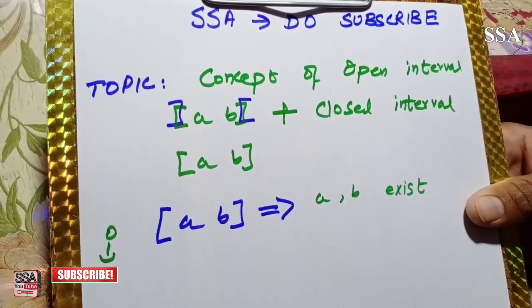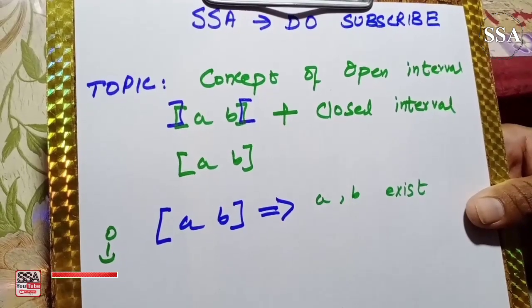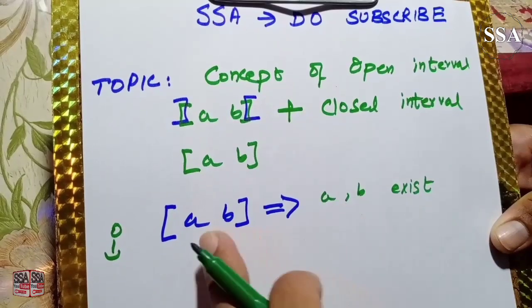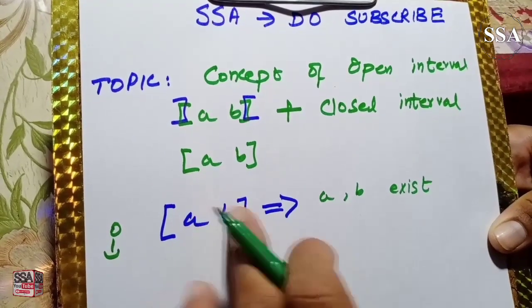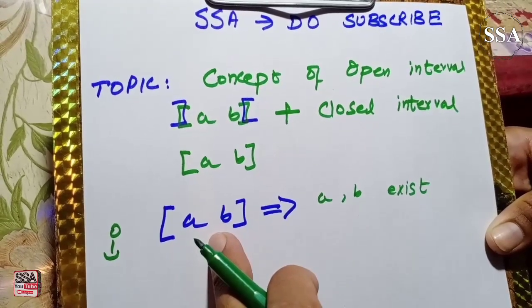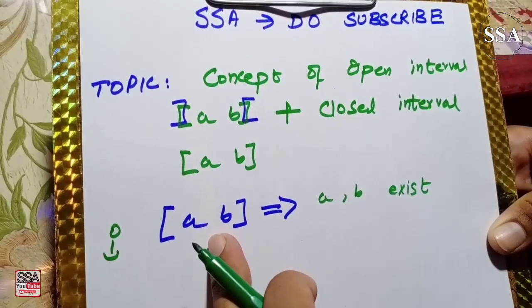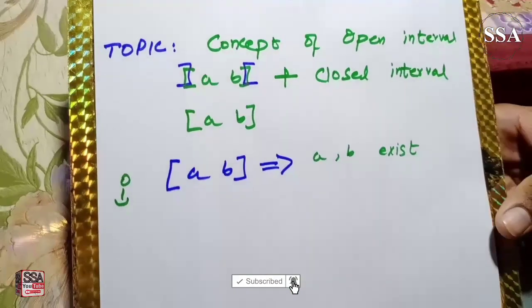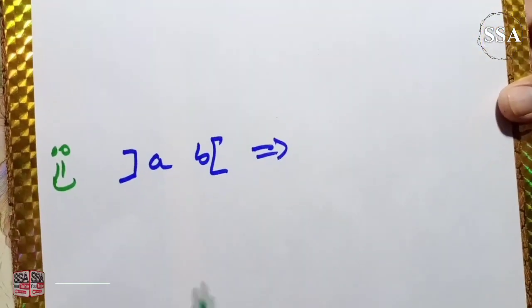In this interval, a or b are included, and all values between a and b, all the numbers that come between them, are also included.